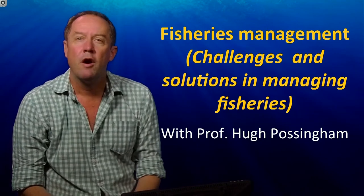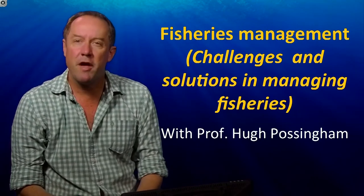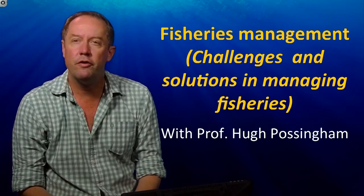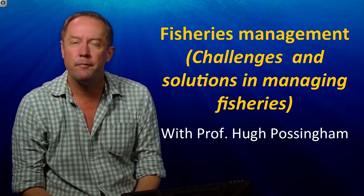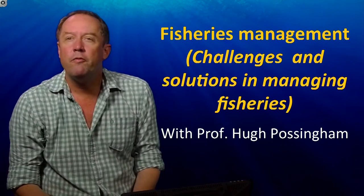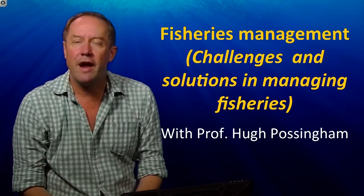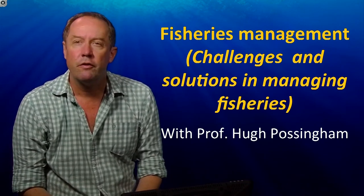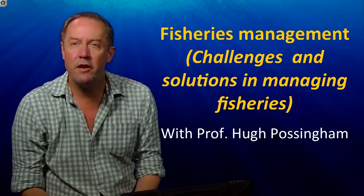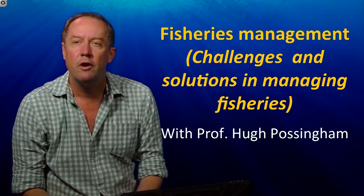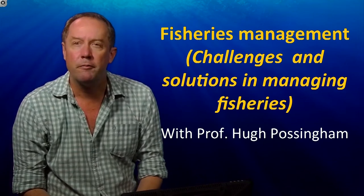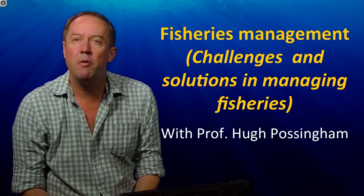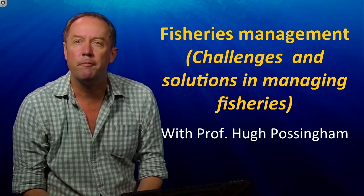My name is Hugh Possingham. I'm Professor of Mathematics and Ecology at the University of Queensland. We've seen how dangerous it is to mismanage fisheries — we lose access to food and profit. So now we need to think about how we solve this problem.